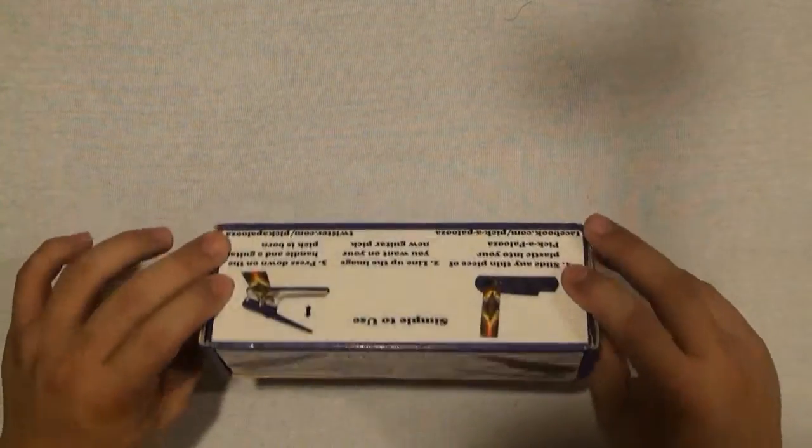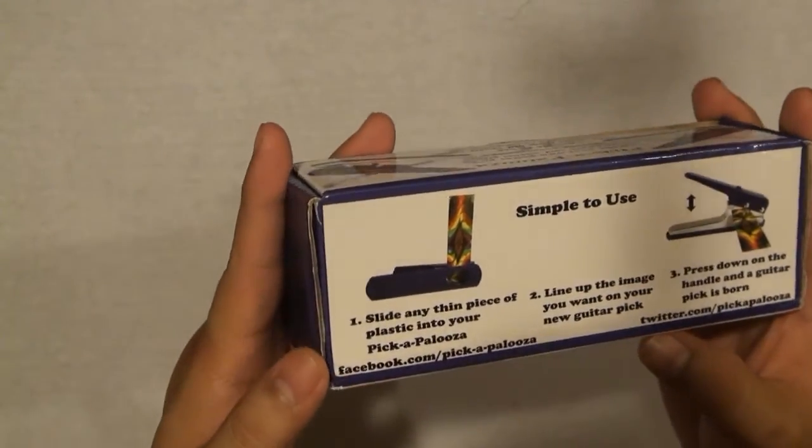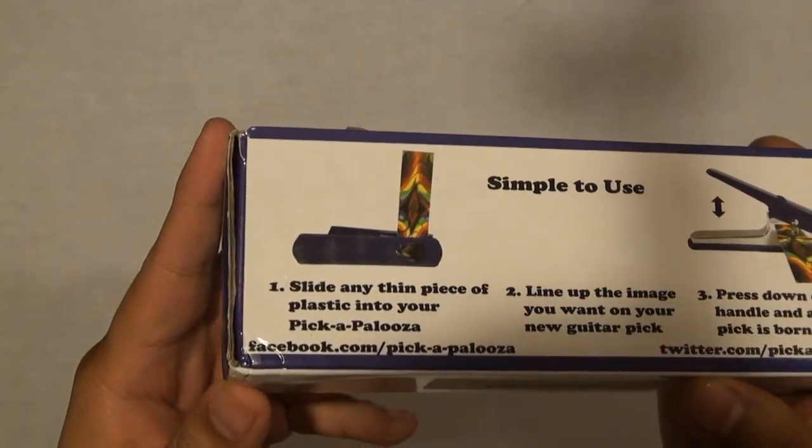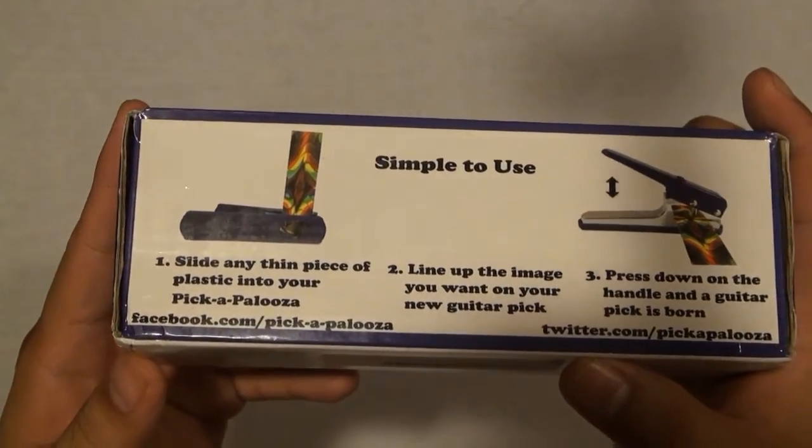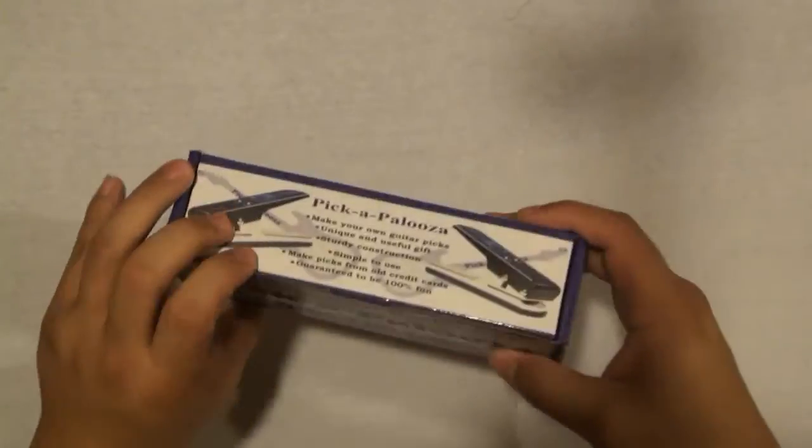This is how I got it out of the Amazon box. And here's the package at the back. It says it has the guide. Slide anything, piece of plastic into Pickapalooza. Lining up. Press down. Let's open it up.